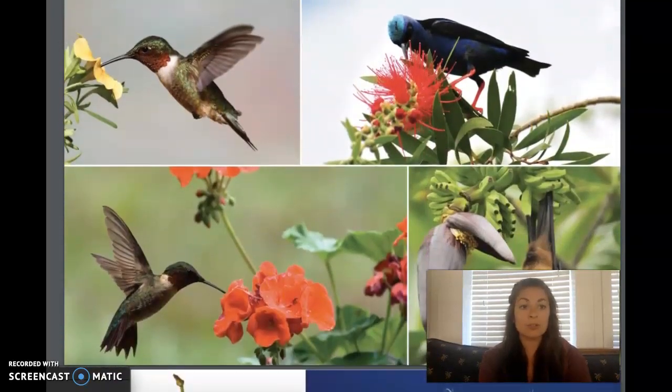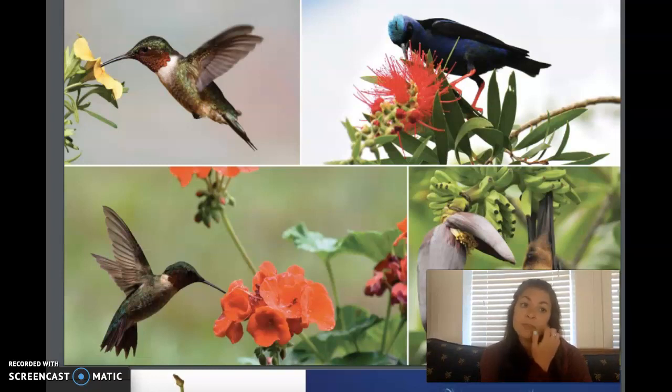Birds are important pollinators, too, especially of wildflowers. For example, hummingbirds have perfectly designed beaks that can reach the nectar inside long, tubular-shaped flowers. There are more than 2,000 different kinds of birds in the world that feed on nectar. Birds have a poor sense of smell and help to pollinate unscented flowering plants because they are attracted by the bright color and shape of the flowers.